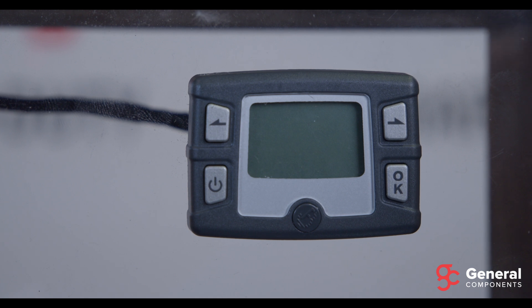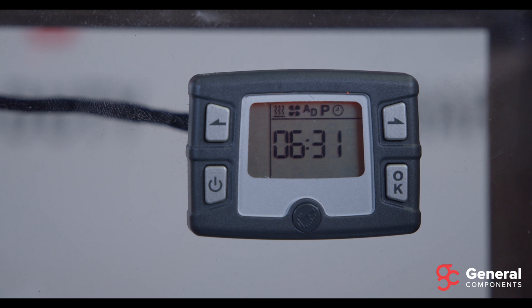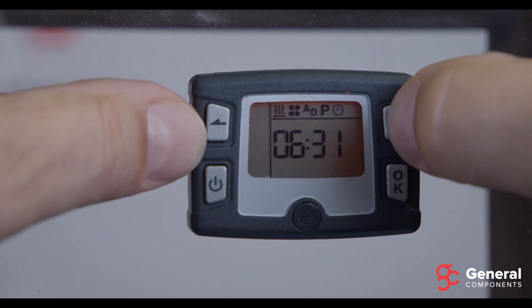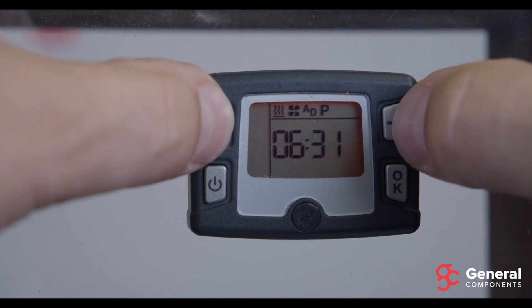When the timer is in the idle state, the display is not on, but any button will wake it up from the idle state. The first thing you want to do when you turn it on is to set the current time. To do that, navigate using the left and right arrow keys on the timer, move to the clock icon, and hit OK to enter.